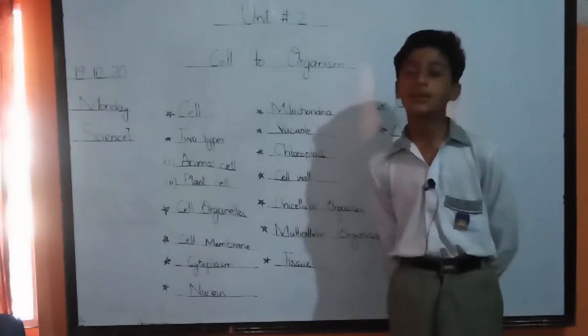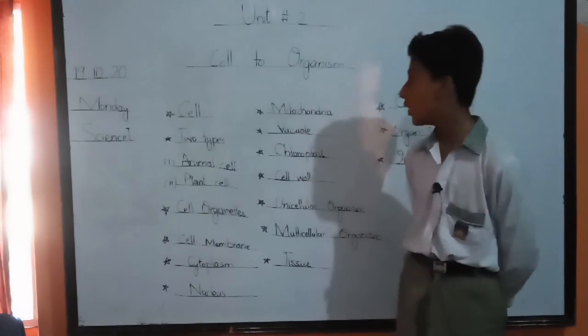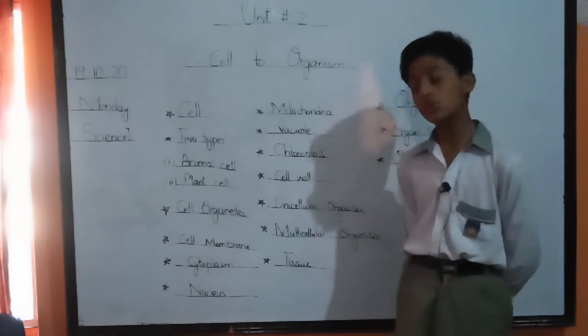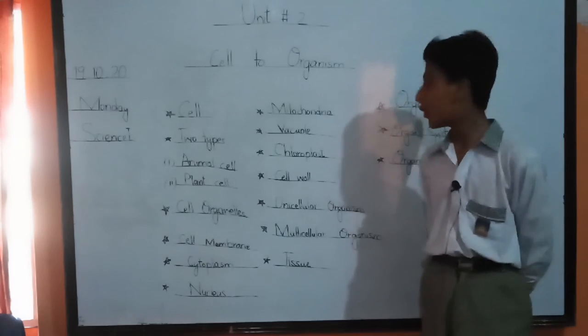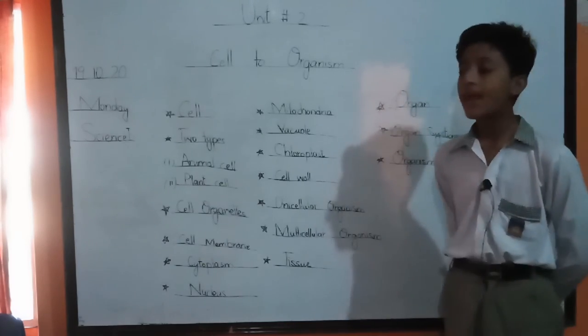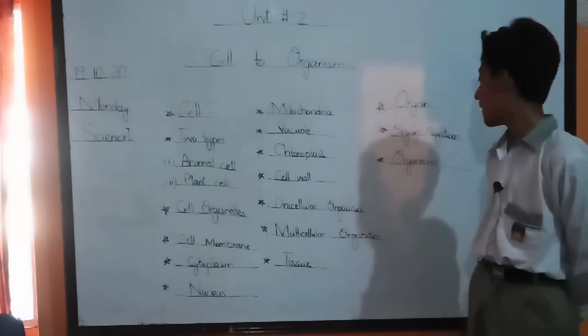Now my topic is tissue. The group of cells make tissue. And the group of tissues make organs. And the group of organs make organ systems. And the group of organ systems make an organism.